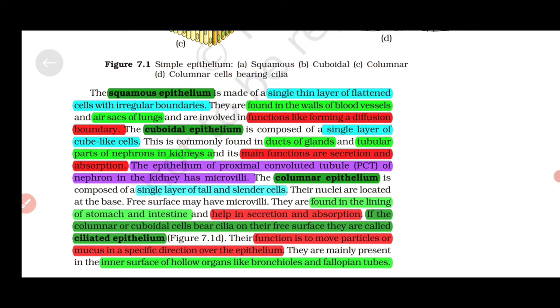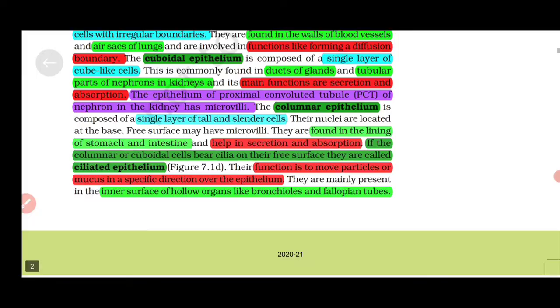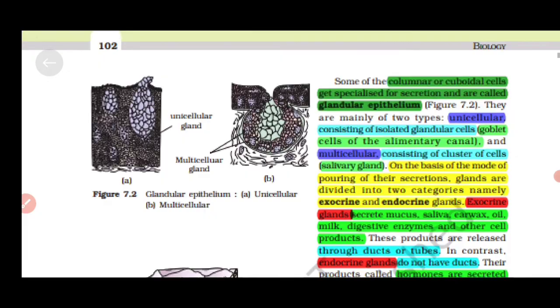The epithelium of the proximal convoluted tubule (PCT) of nephron in the kidney has microvilli. Columnar epithelium is a single layer of tall and slender cells found in the lining of stomach and intestine, helping in secretion and absorption. If the columnar or cuboidal cells bear cilia on their free surface, they are called ciliated epithelium, which functions to move particles or mucus in a specific direction, found in bronchioles and fallopian tubes.